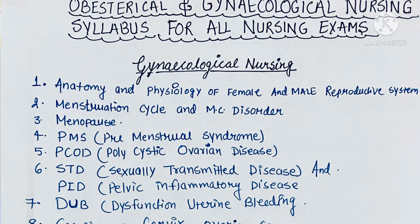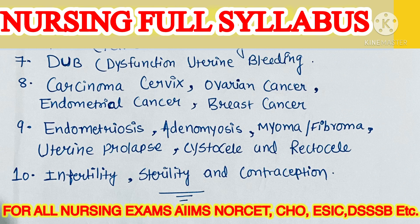In comparison to obstetrical nursing, most questions come from obstetrical nursing topics. In gynecological nursing, the important conditions include: PCOD (polycystic ovarian disease), STD (sexually transmitted disease), PID (pelvic inflammatory disease), DUB (dysfunctional uterine bleeding), carcinoma cervix, ovarian cancer, endometrial cancer, breast cancer, endometriosis, adenomyosis, myoma/fibroma, uterine prolapse, cystocele, rectocele, infertility, sterility, and contraception.